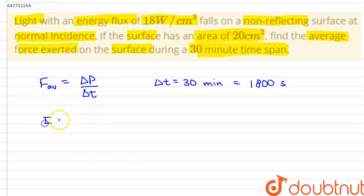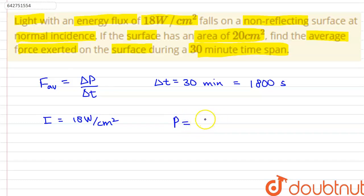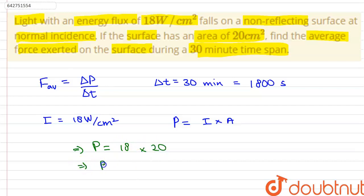As given in the question, the intensity of light equals 18 watts per centimeter squared. Therefore, total power, represented by capital P, equals intensity multiplied by area of the surface. That gives P equal to 18 multiplied by 20, which gives us P equal to 360 watts.